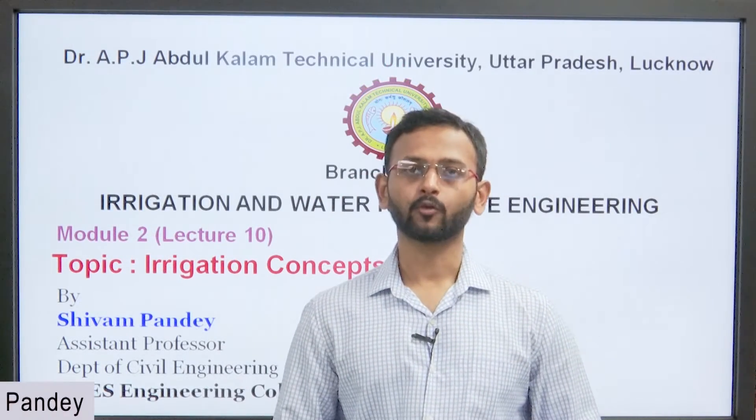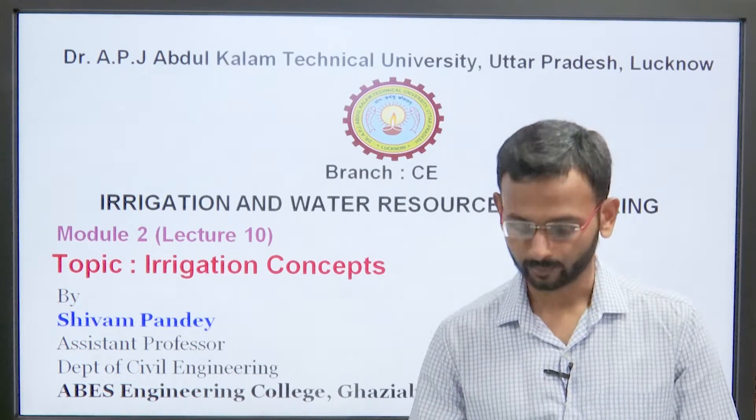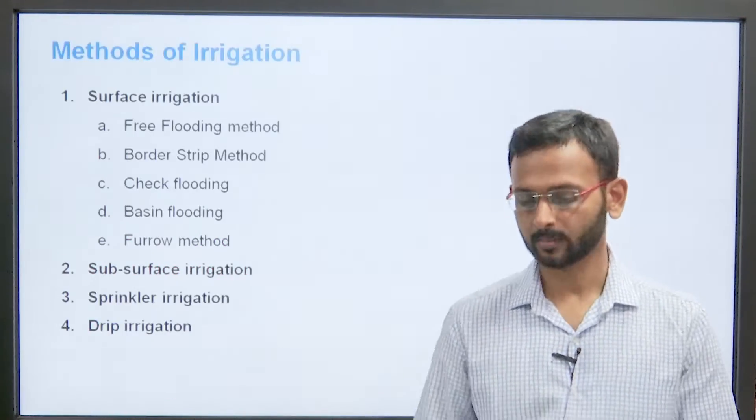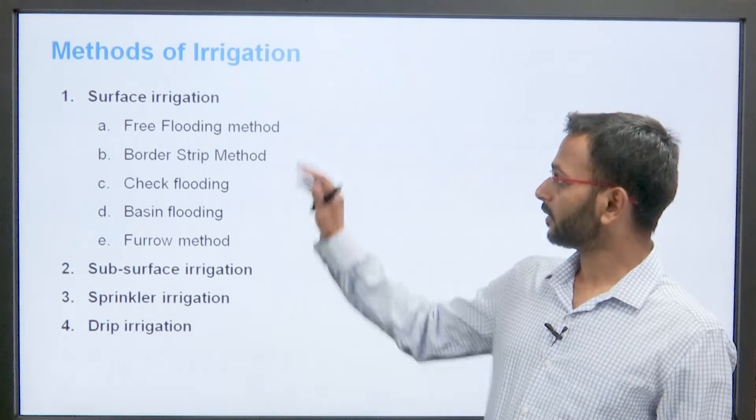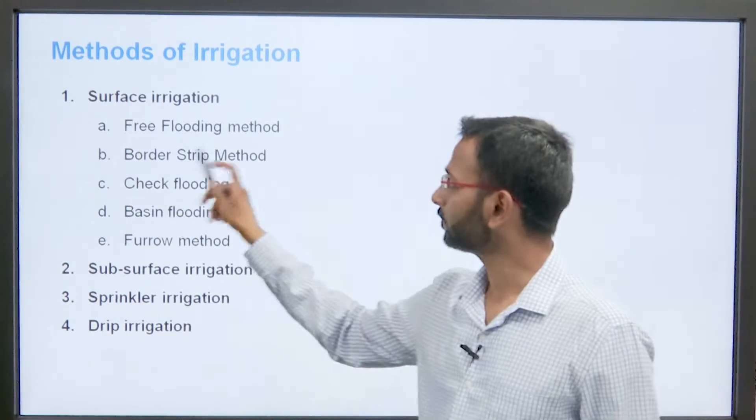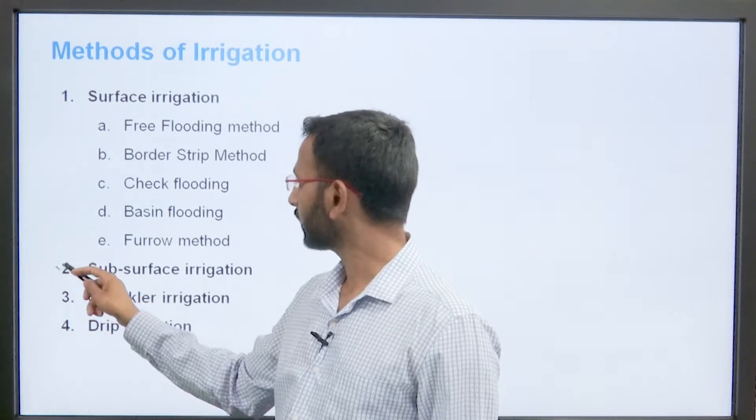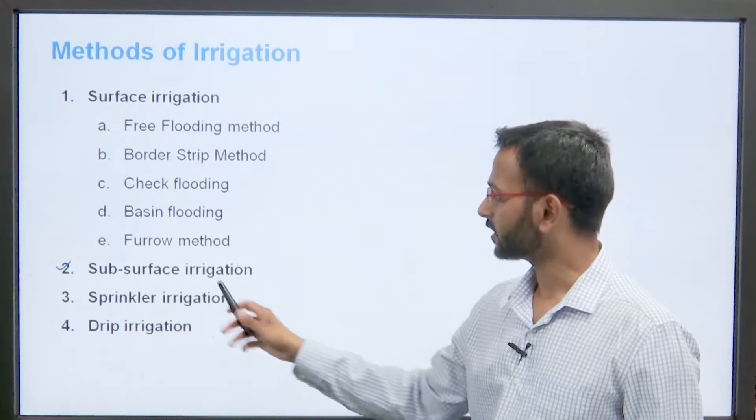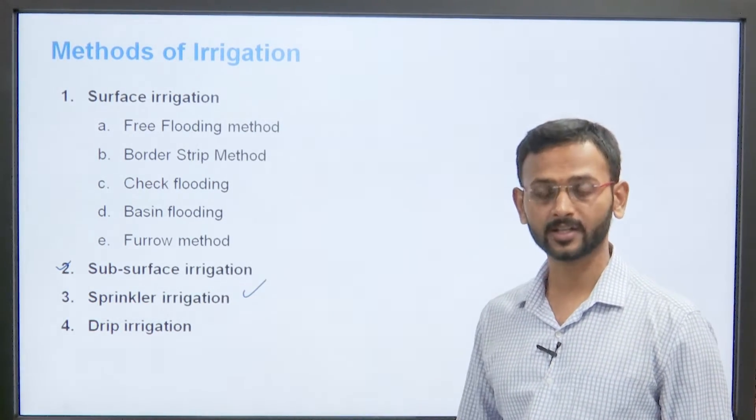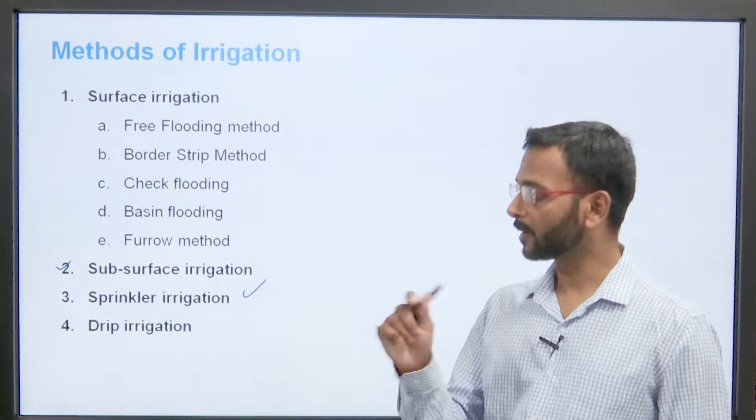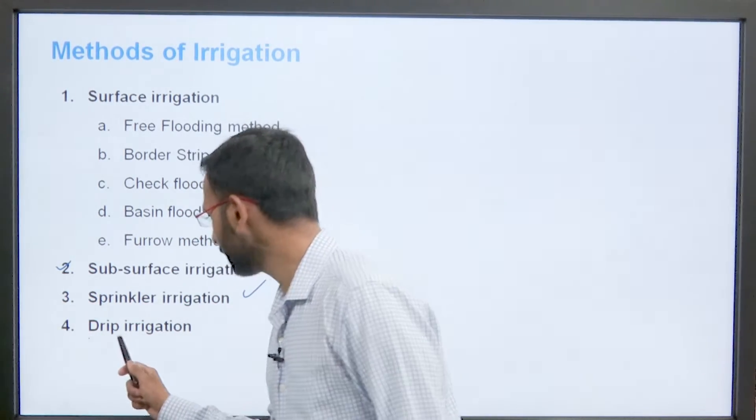Hello everyone, irrigation and water resource engineering ke is nae lecture me aap sabi ka swagat hai. Merah nahme Shivam Pande and we will be beginning with the topic of irrigation concept today. Hamne last class mein kuchh cheeze iske baare mein baat karhi thi. Jaisa ki ham yahaan peh dekh paa rahe hai, method of irrigation. Method of irrigation me humne pehle ki 3 methods jo ki hai surface irrigation method, subsurface irrigation method and sprinkler irrigation. Yee 3 method humne detail mein dekhae ki isme kya advantages hai, kya disadvantages hai. Today we will be discussing about drip irrigation.